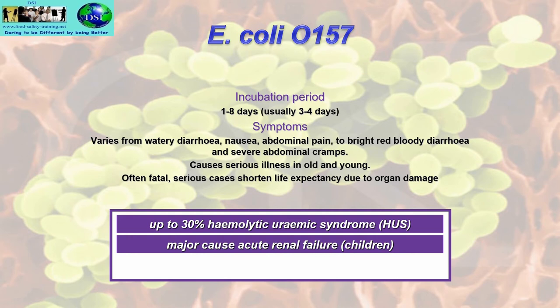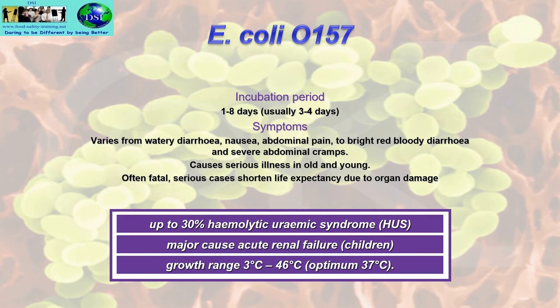It is a major cause of acute renal failure in children. The growth range is 3°C to 46°C, with an optimum of 37°C. Studies have shown it will grow quite happily at 4°C in a fridge, which is why we need to get fridge temperatures down to below 3°C if possible, without freezing items like salad.